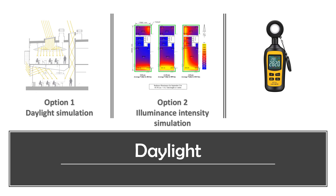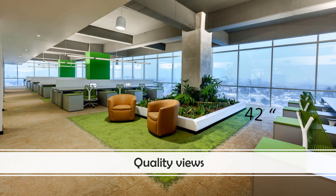Option two is a simulation to calculate the luminance intensity for direct sun and diffuse sky components at 9am and 3pm. You need to provide lighting levels between 300 and 3,000 lux at 9 and 3 for 55% for one point, 75% for two points, and 90% for three points. Option three is actual measurement of the illuminance in each regularly occupied space for between one and three points.